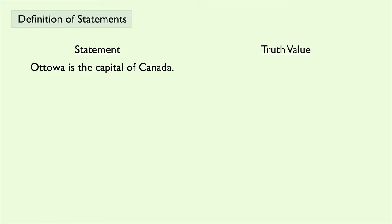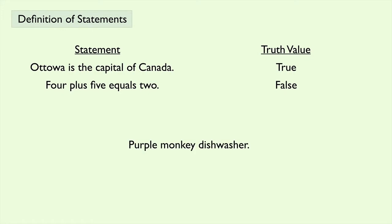Let's look at some examples of statements. "Ottawa is the capital of Canada" is an example of a statement with a truth value of true. "4 plus 5 equals 2" is an example of a statement with a truth value of false. "Purple monkey dishwasher" is not a statement, since it does not make sense grammatically. Notice that statements are declarative — they make an assertion.